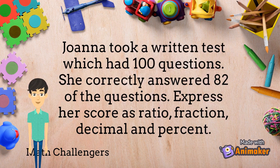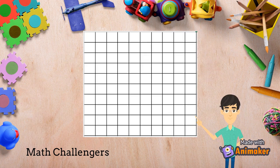Joanna took a written test which had 100 questions. She correctly answered 82 of the questions. Express her score as a ratio, fraction, decimal, and percent. We can illustrate the problem as follows — it shows that out of 100, Joanna got 82 correctly.